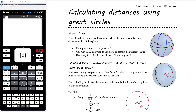In the previous video we introduced the concepts of longitude and latitude, how those are measured, and how it's a sort of grid system we use on the surface of the Earth to locate points. What we want to look at over the course of the next two videos is using that grid system of longitude and latitude to calculate distances between points on the Earth's surface.